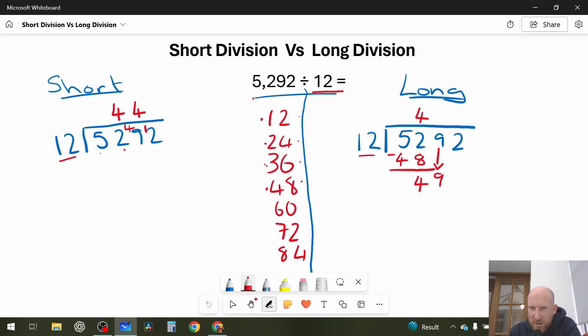Let's have a look at how that looks in long division, how many 12s in 49, 1, 2, 3, 4. And then I'd do 49, take away 48, and the answer is 1 remainder.